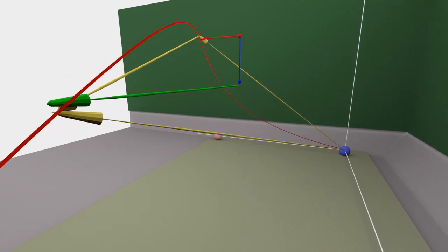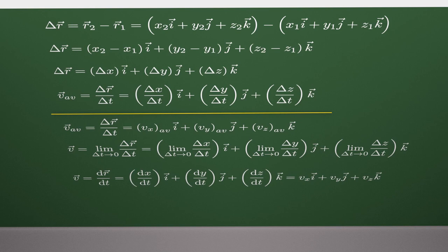Now, average velocity. Average velocity, which is defined as delta r per delta t, can be expressed by three components, delta x per delta t, delta y per delta t, and delta z per delta t.